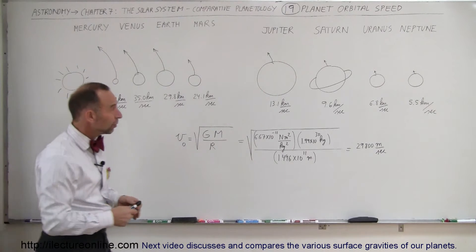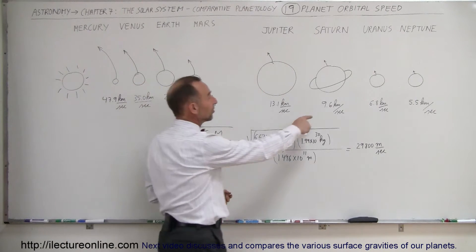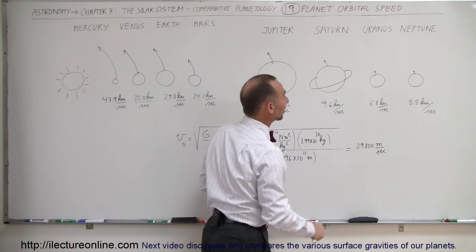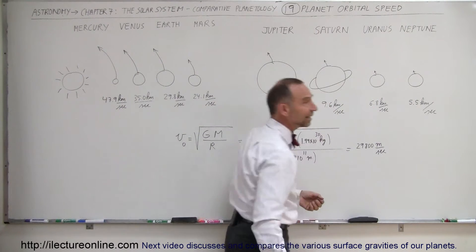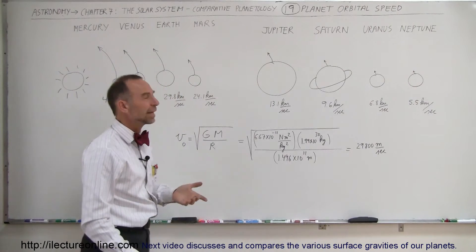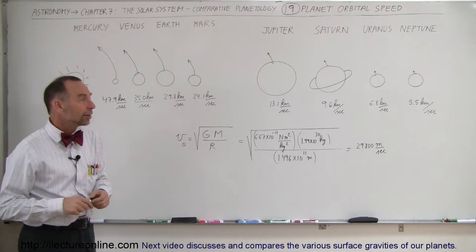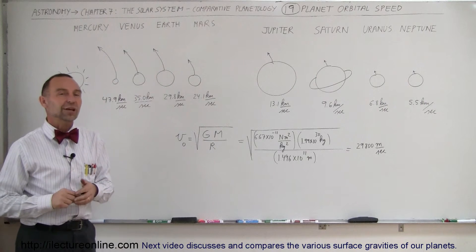Mars, a little slower, 24. Jupiter, 13. Saturn, just below 10 km per second. Uranus at 6.8 km per second. And Neptune finally, being so far out at 30 astronomical units, just kind of moseying along at 5.5 km per second.